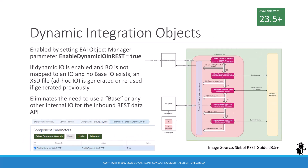What if we could get rid of the need to create and maintain integration objects for RESTful business data access altogether? With 23.5, this becomes reality, as you can simply register any business object and leave the integration object field blank. The groundbreaking change is enabled by the new dynamic integration objects feature, which is enabled by default by means of a new component parameter named Enable Dynamic IO in REST.